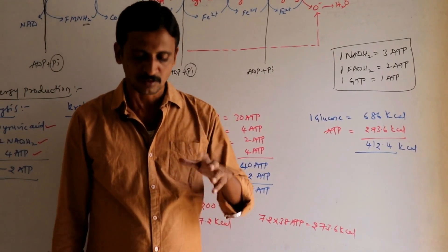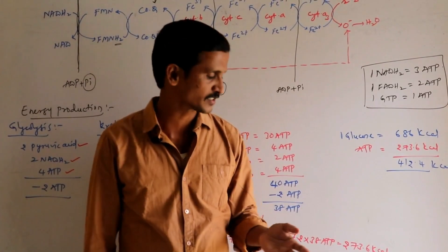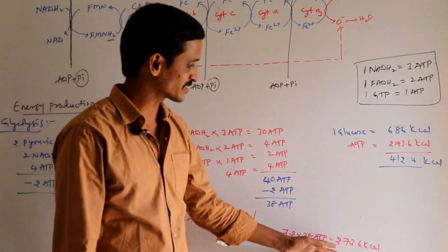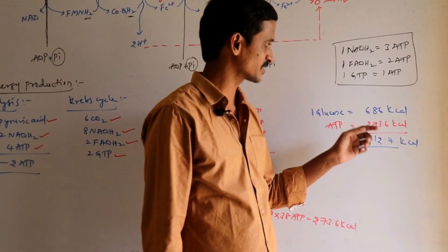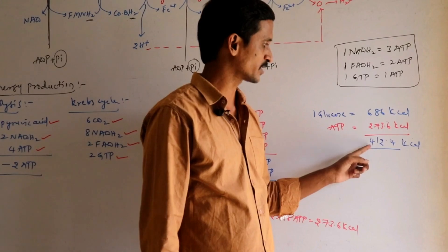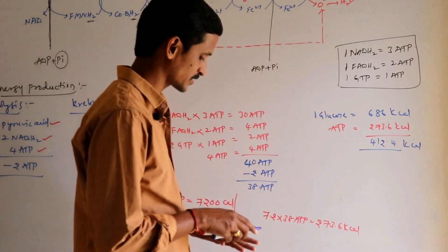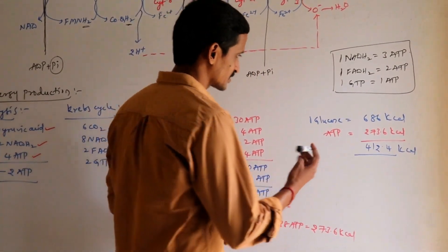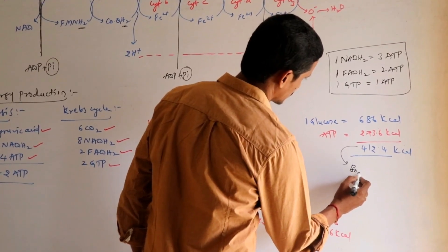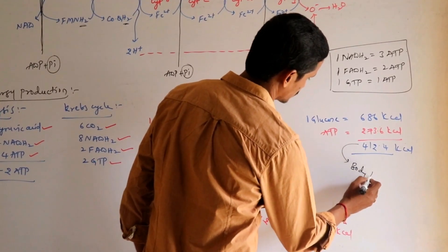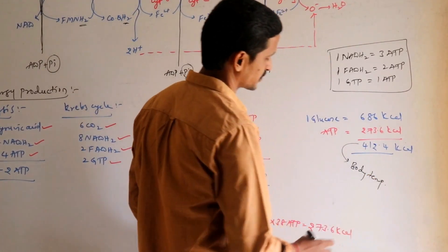What about the remaining approximately 60% of energy? When you subtract 273.6 kilocalories from 686, you get 412.4 kilocalories. This 412.4 kilocalories is converted to form body temperature — body heat.